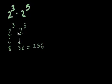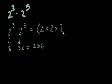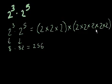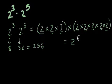Let's think about what 2 to the third times 2 to the fifth means. 2 to the third is 2 times 2 times 2, and we're multiplying that times 2 to the fifth, which is 2 times 2 times 2 times 2 times 2. So what we have is 2 multiplied by itself 8 times total, which is the same thing as 2 to the eighth.